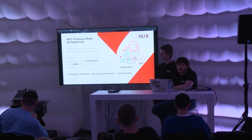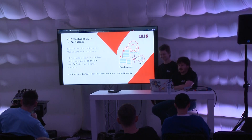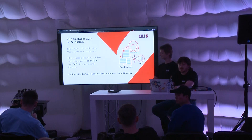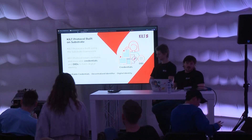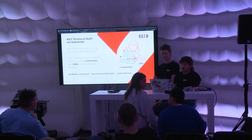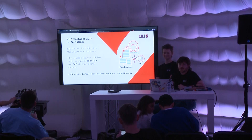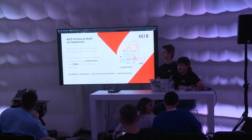First off, a little bit of history. What does KILT do and why we chose to use Substrate as a framework. There are three main reasons for this. First, we wanted to offload some of the blockchain-specific logic in the form of pallets — things like transactions, consensus, and other things. So we didn't need to do all of that; Substrate had this all ready for us.